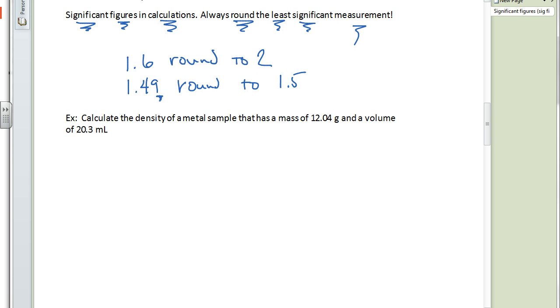Here's a practical application of rounding and how we use this. Calculate the density of a metal sample that has a mass of 12.4 grams and a volume of 20.3 milliliters. The formula that we're going to use is density equals mass divided by volume. We're going to plug these values in. So we have 12.04 grams, there's our mass, and over here we had our volume of 20.3 milliliters. This is set up so that we can divide.